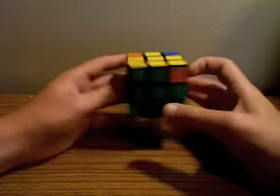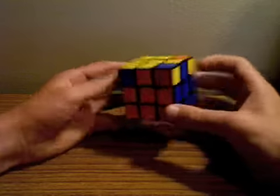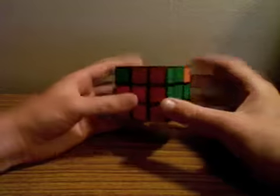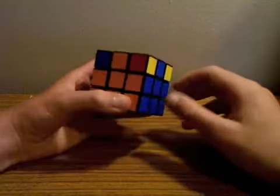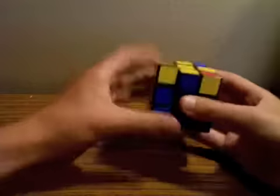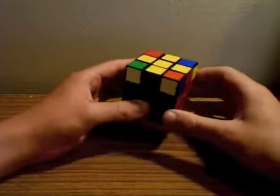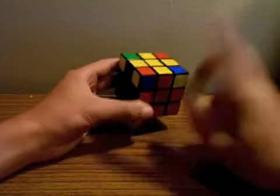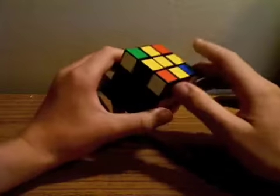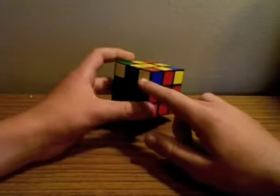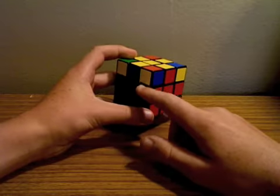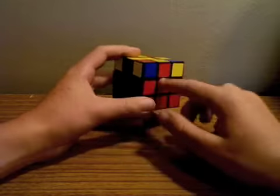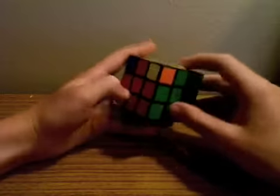You're going to look along the top layer and find any corner that is either solved or permuted correctly, just not oriented correctly. How you would know if the corner was in the right place but not flipped the right way is you would look at the colors on it. Hold it here and see if the colors on that corner are in the same place as their center.